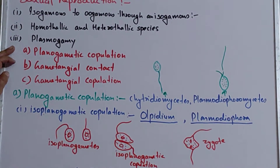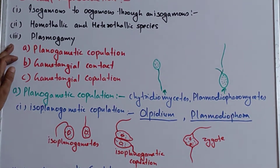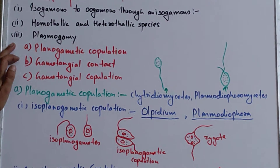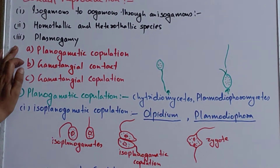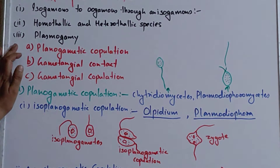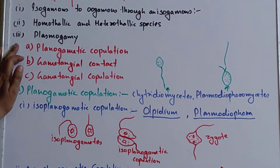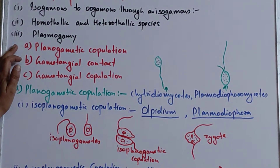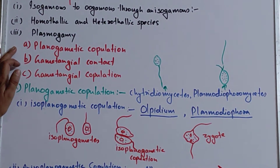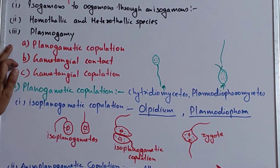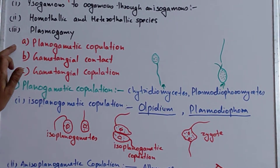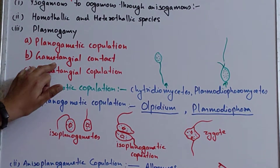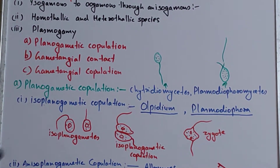The first step in sexual reproduction is bringing together the male and female nuclei in the same cell. This process is called plasmogamy. Plasmogamy is carried out in these fungi by three methods: planogametic copulation, gametangial contact, and gametangial copulation.